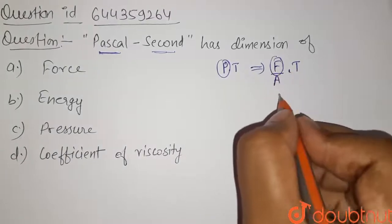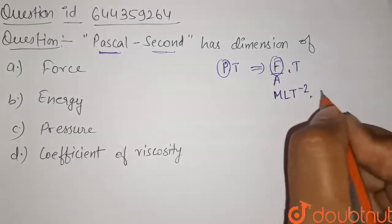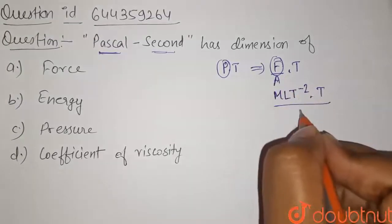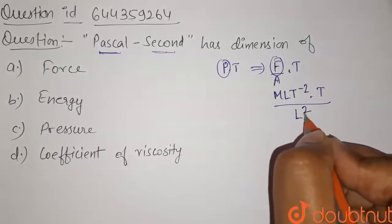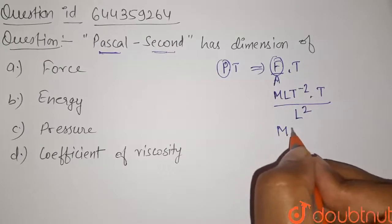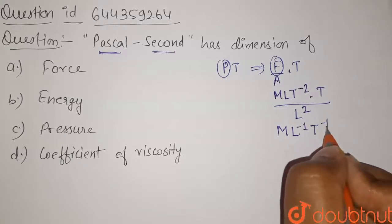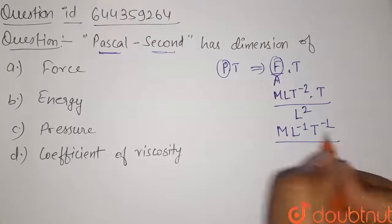The dimension of force is given by MLT^-2 into T and divided by area so it is L^2. So the dimension of Pascal-second will be given by ML^-1T^-1. So this is the dimension for Pascal-second.